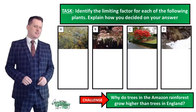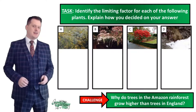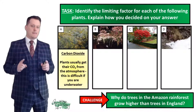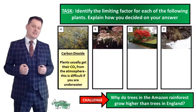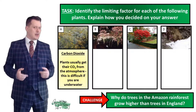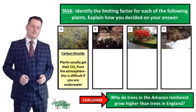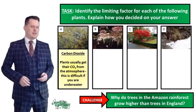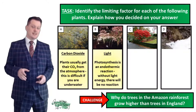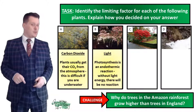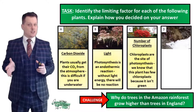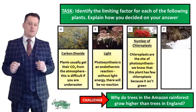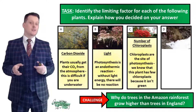Let's look at plant A. The limiting factor for plant A is the concentration of carbon dioxide. Plants usually get their carbon dioxide from the atmosphere, but this is difficult if your plant is underwater, and because there is less carbon dioxide it decreases the rate of photosynthesis. Looking at plant B, its limiting factor is the amount of light — photosynthesis is an endothermic reaction and without light there will be no reaction. Plant C, which you might recognize from our starter, has a lack of chloroplasts. Chloroplasts are the site of photosynthesis, and we know this plant is lacking in chloroplasts because the leaves aren't green.